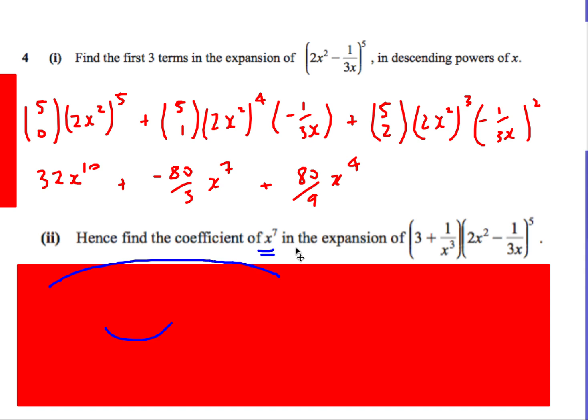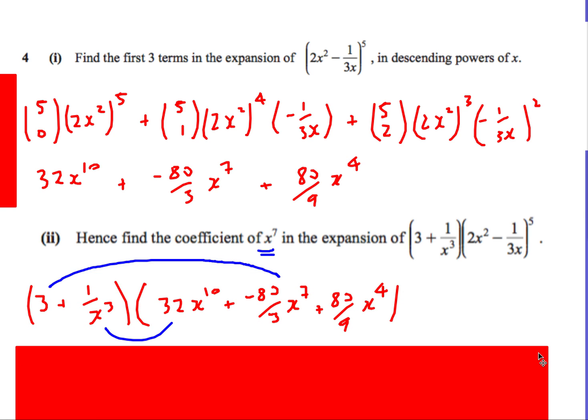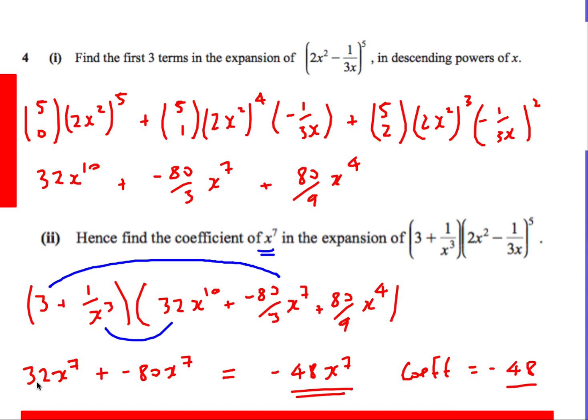Exactly the same idea as this one coefficient of x^7. Well, this bit here, I've already worked out this, and then I've now got a new bracket to multiply it by. So let's do the same as last time. Put our previous answer in one of the brackets. The new bracket over here. And then we're saying, oh, how do we end up with an x^7? Well, I could do 3 times by minus 80 over 3x^7. That would give me an x^7 term. Or 1 over x cubed times by 32x to the 10. Again, the x cubed and x^10 is going to give us the x^7. So there we go. I end up with 32x^7 and a minus 80x^7. So therefore, I get minus 48x^7. Therefore, what's the coefficient? The coefficient is minus 48.